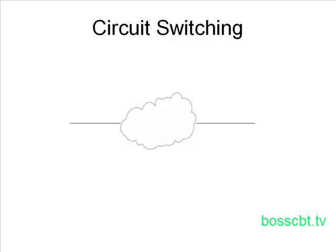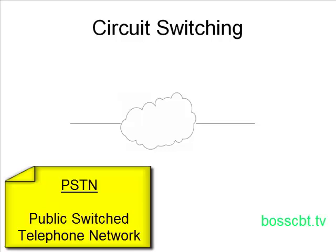Let's start with circuit switching. The best example of circuit switching is the PSTN, the Public Switch Telephone Network. It's been around for a long time, and between the two methods — circuit switching and packet switching — circuit switching is older. It's been around longer; it was the first one.